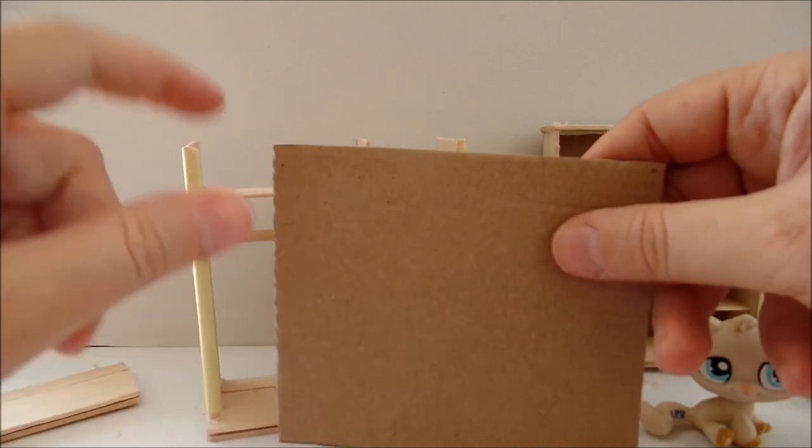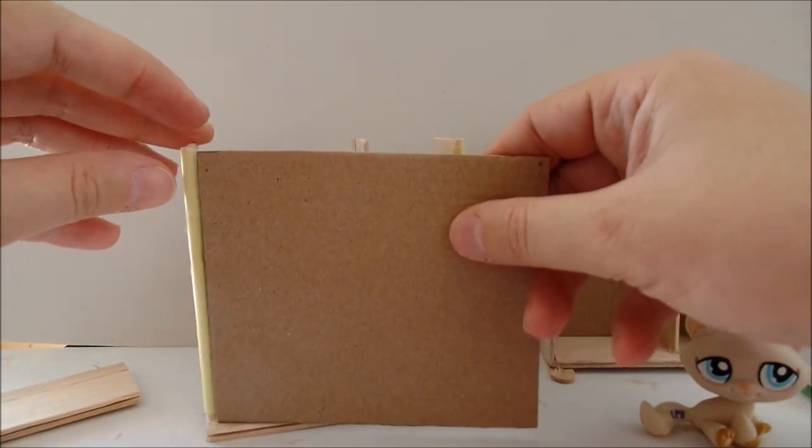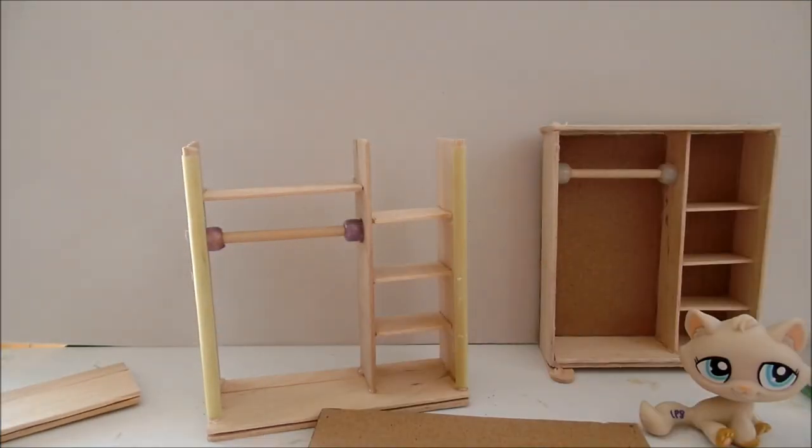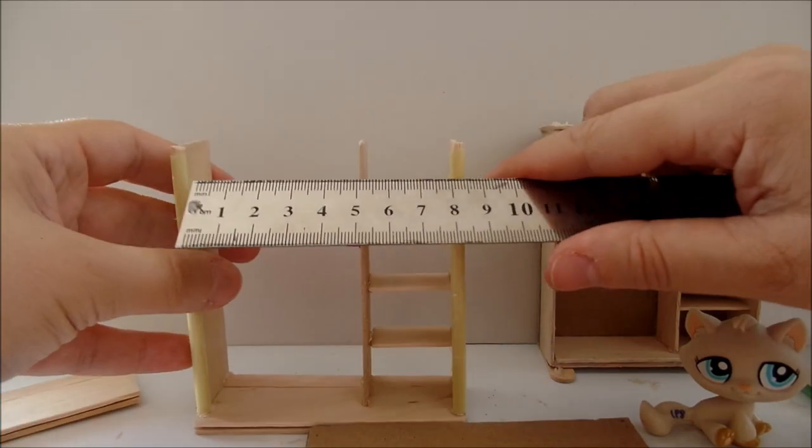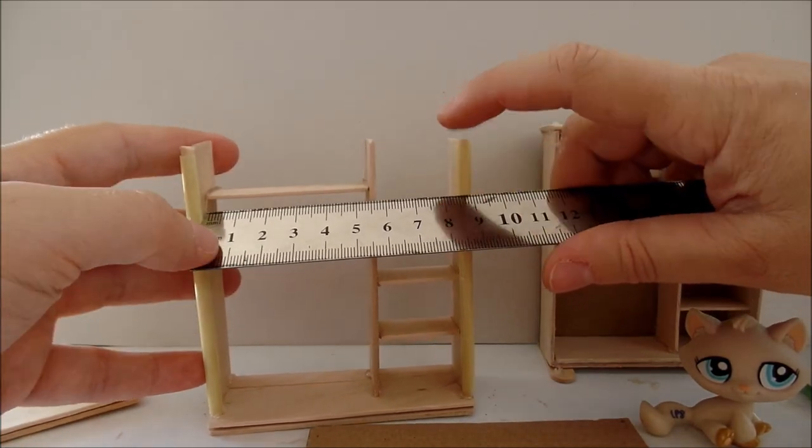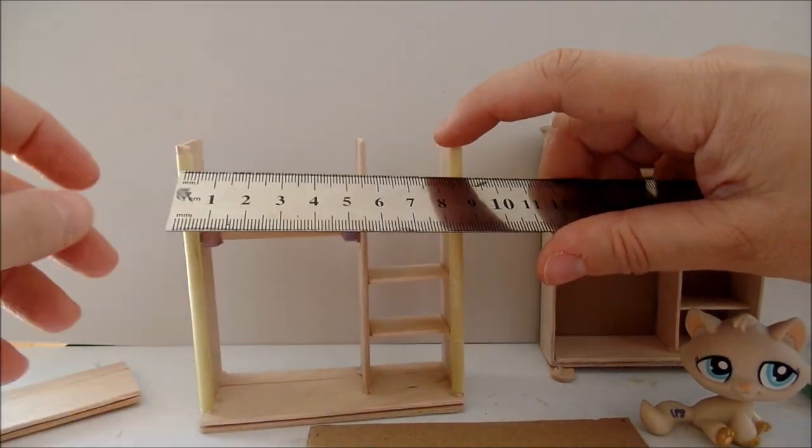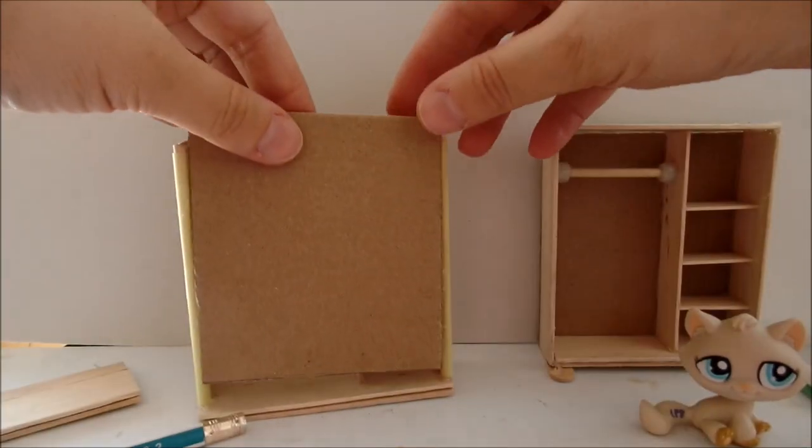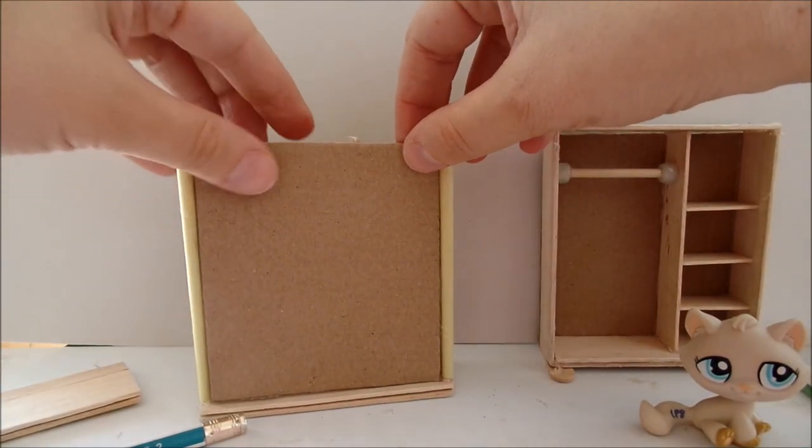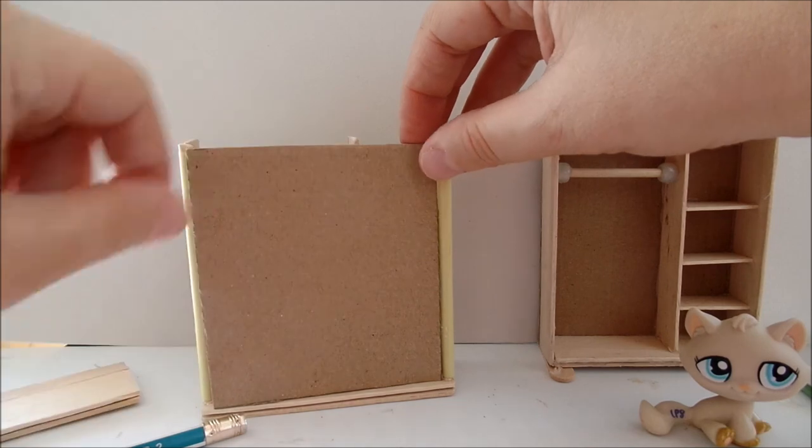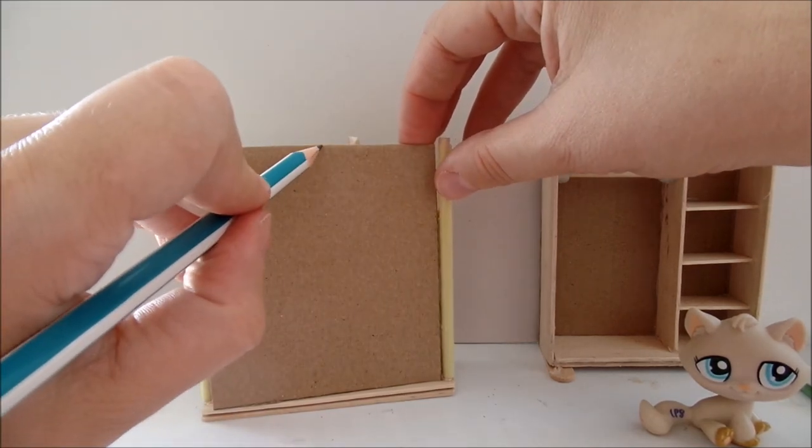Now let's figure out the size of the doors. We already know the height of the door, now we need to measure the space between the straws. See if it fits between the straws. Now you just have to find the middle of it and cut in two.